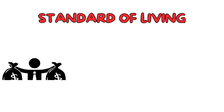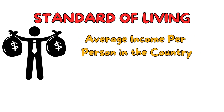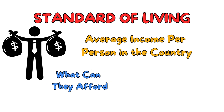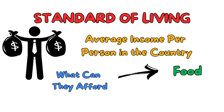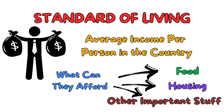Standard of living. This is like checking how well off the people are in terms of money. We look at the average income per person in the country. It's not just about how much money people make, but also about what they can afford with that money, like food, housing, and other important stuff.